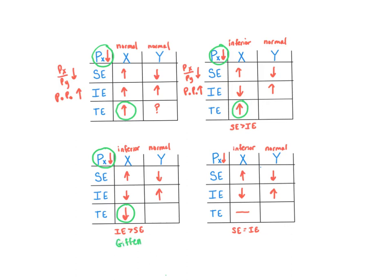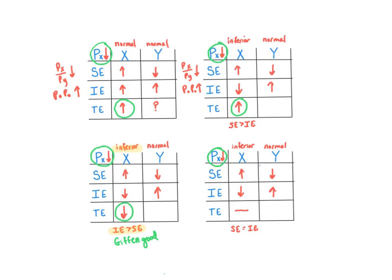We call this good a Giffen good. A Giffen good necessarily has two defining properties: first, all Giffen goods are inferior goods by definition; and second, they are inferior goods for which the income effect is stronger than the substitution effect, leading to a total effect that breaks the law of demand. A third possibility when X is inferior is that the income and substitution effects are of equal magnitude and cancel each other out, resulting in no change in consumption of X and perfectly inelastic demand. Note that without more information, we cannot determine the total effect on Y in any of these cases.